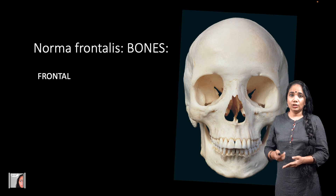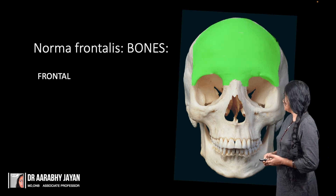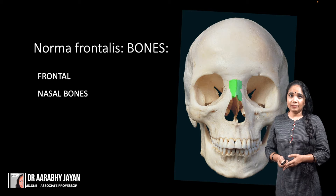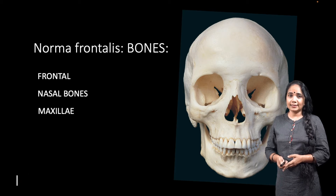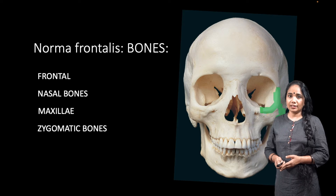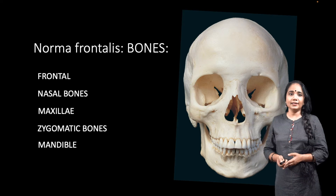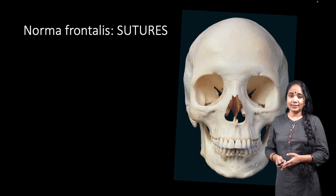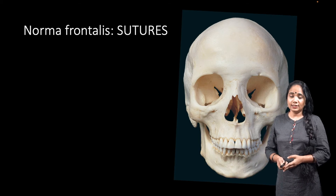The most prominent one is the frontal bone which is seen at the very top. Then we have the two nasal bones in midline. Immediately lateral to that we have the two maxillae, the right and the left maxillae. Lateral to the maxillae we have the zygomatic bones, the left and the right ones, and then we have the mandible. So these are the main bones forming the norma frontalis.